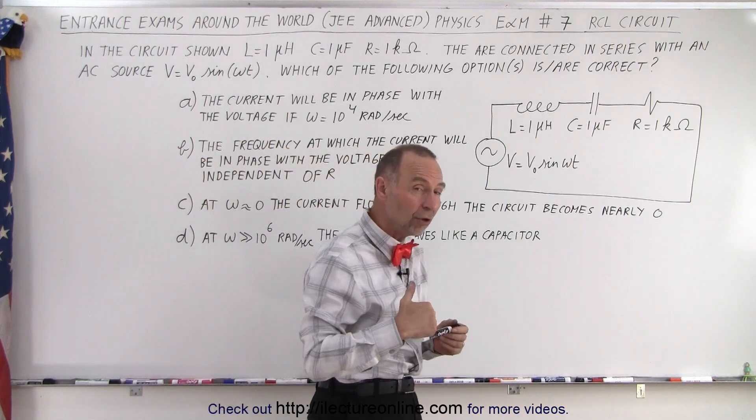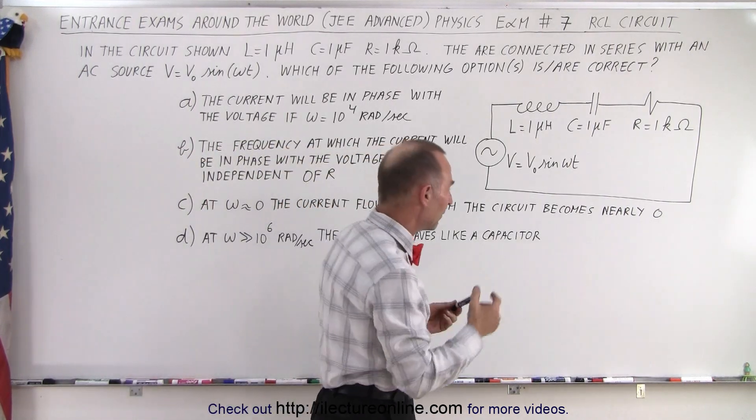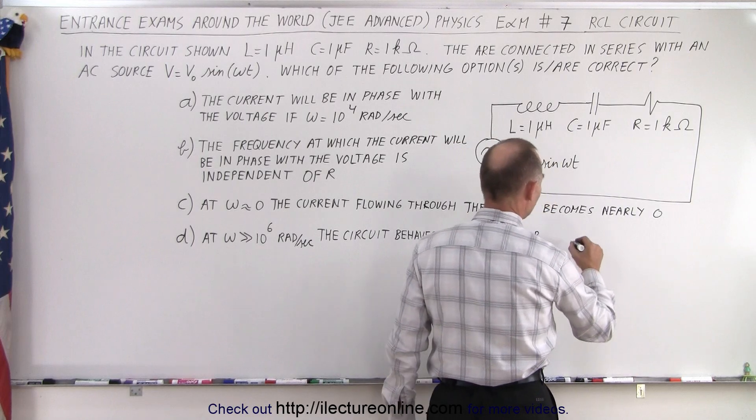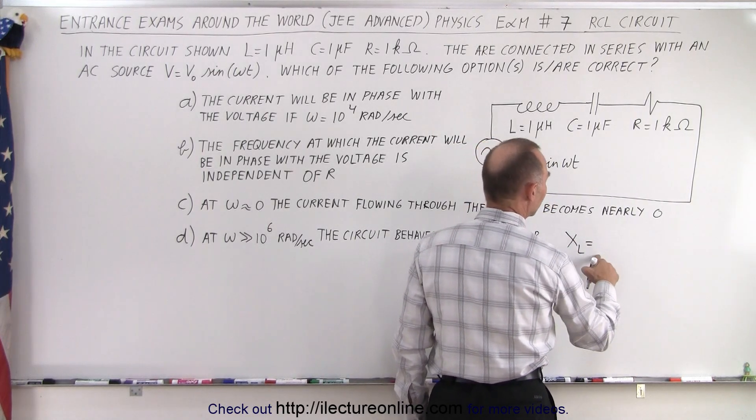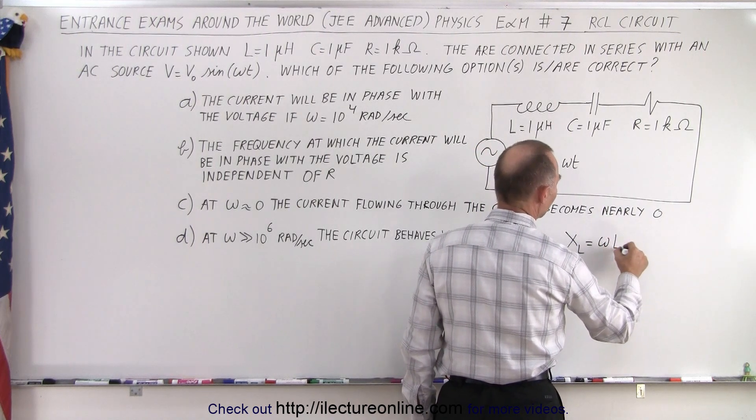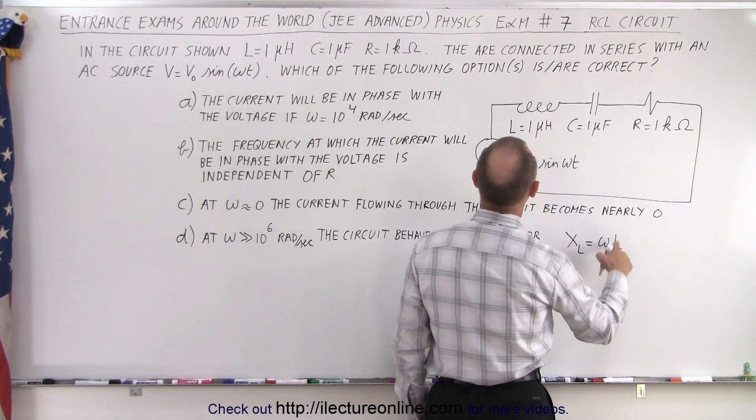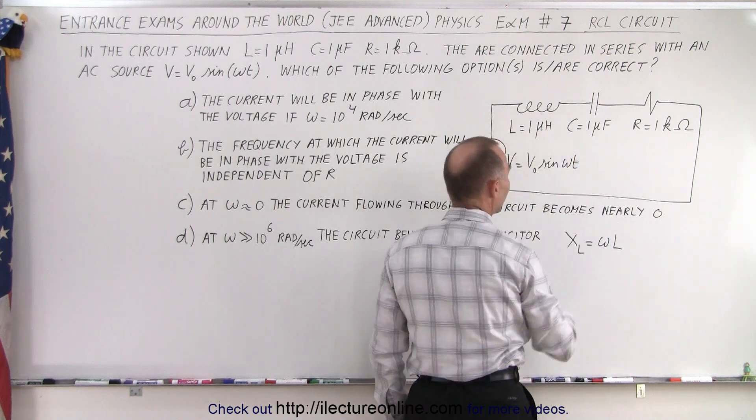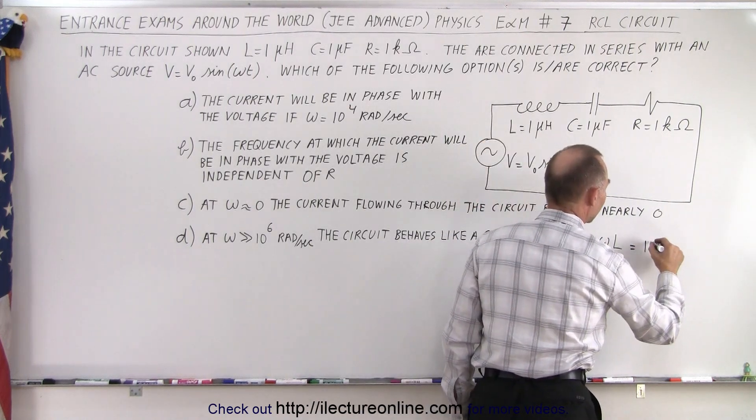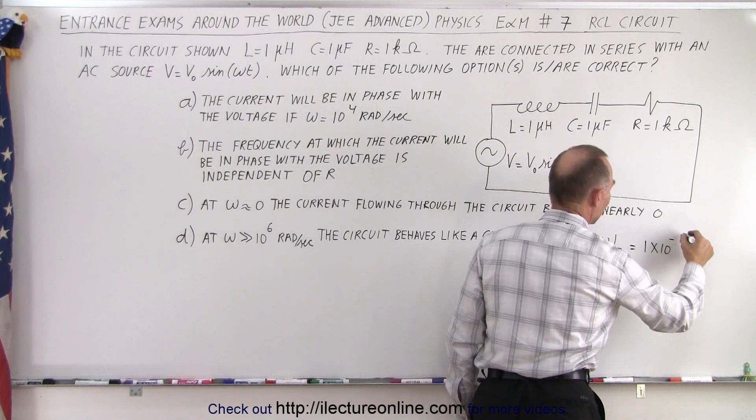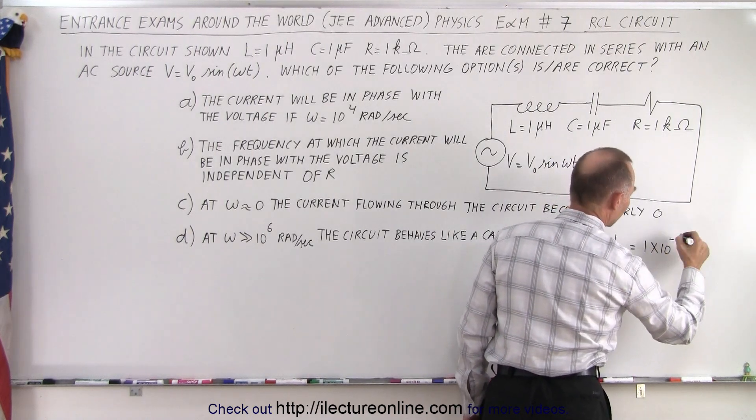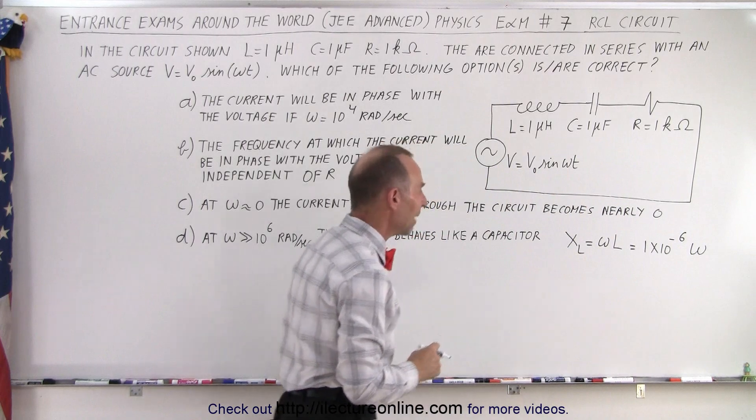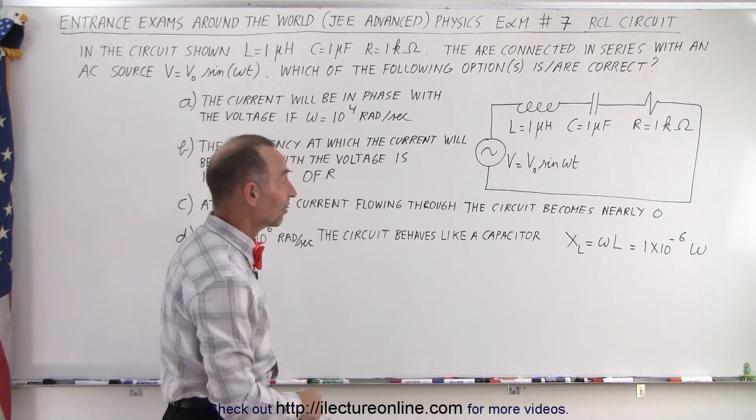Let's find the reactance of both the inductor and the capacitor. X_L, the reactance of the inductor, is equal to omega times L. Now in this case L is 1 micro Henry, so X_L equals 10^-6 times omega.